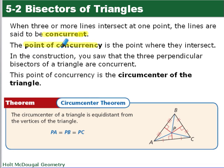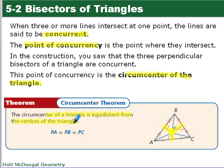The point of concurrency where the three perpendicular bisectors intersect is called the circumcenter of the triangle, and that brings us to the circumcenter theorem. The perpendicular bisectors all meet at the circumcenter, and the circumcenter is equidistant from the vertices of the triangle. So PA is congruent to PB, which is congruent to PC.